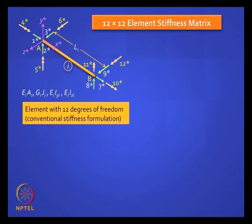We have looked at the truss element, which is a special case of this space frame element, and also at the beam element and the grid element. In the grid element, you had the torsional degree of freedom, corresponding to 4* and 10*. The plane frame element is just a combination of the beam element and the truss element, but we have some additional degrees of freedom.